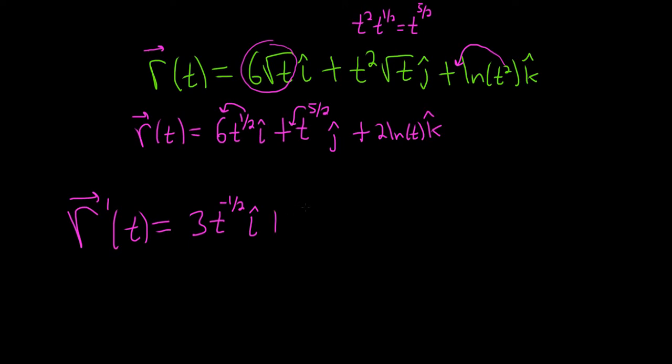Here we bring down the 5/2. So 5/2, t. 5/2 minus 1 is 5/2 minus 2/2, which is 3/2. j-hat plus,